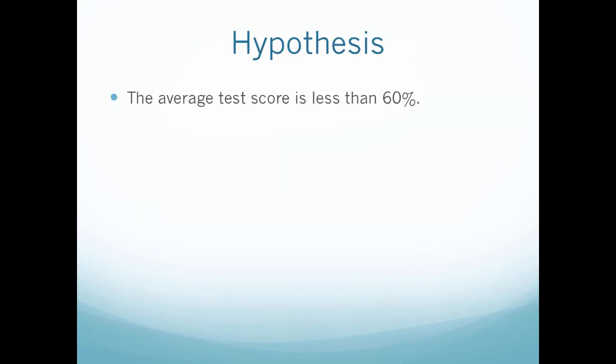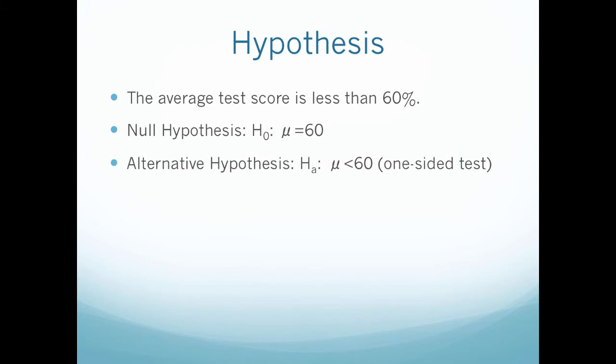So let's kind of write out what we know. The average test score is less than 60%. So my null hypothesis is going to be that mu, or my population average, equals 60%.